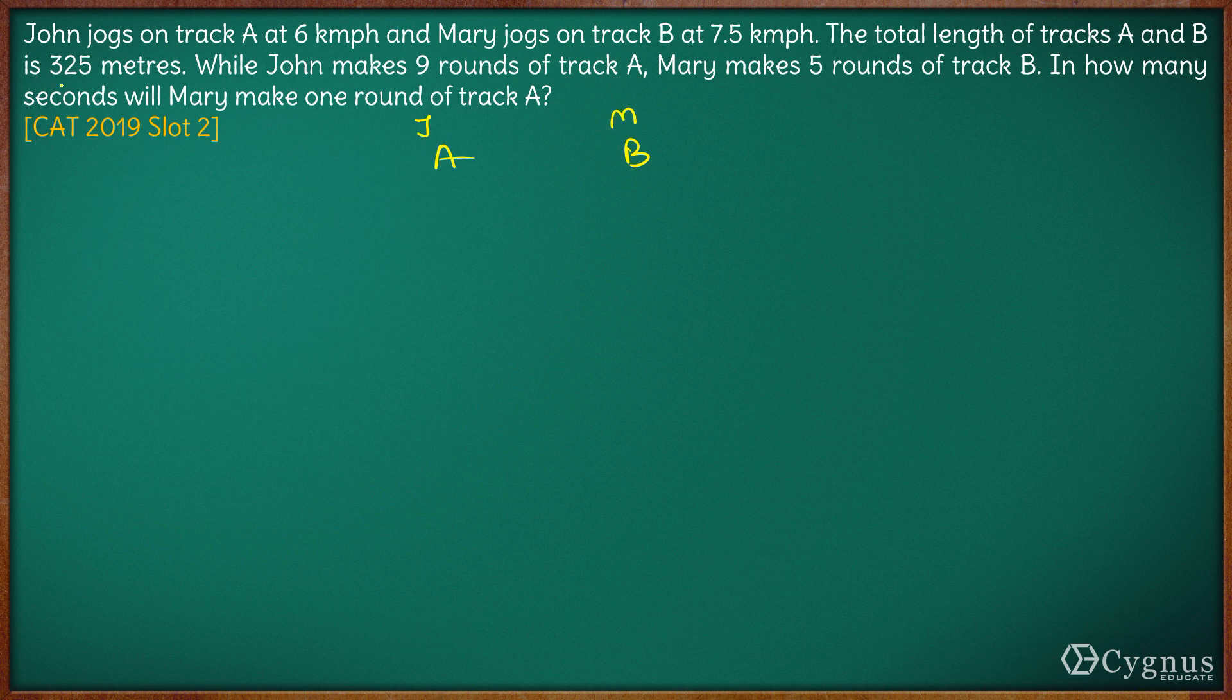The total length of the tracks is 325 meters. Let's say if the length of track A is A, then the length of track B will be 325 minus A.